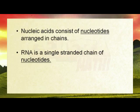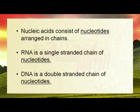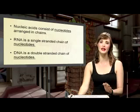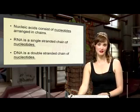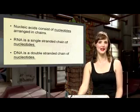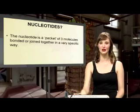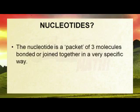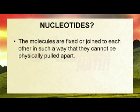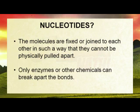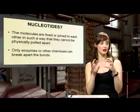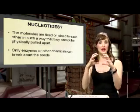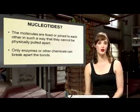In RNA, it is a single strand of nucleotides, and in DNA it is a double strand of nucleotides. DNA and RNA, although similar in some ways, are very different in others. A nucleotide is a packet of three molecules bonded together in a very specific way. They are joined to each other so that they cannot be physically pulled apart — only specific enzymes or chemicals can break these bonds. Many of these packets added together create our DNA or RNA strands.